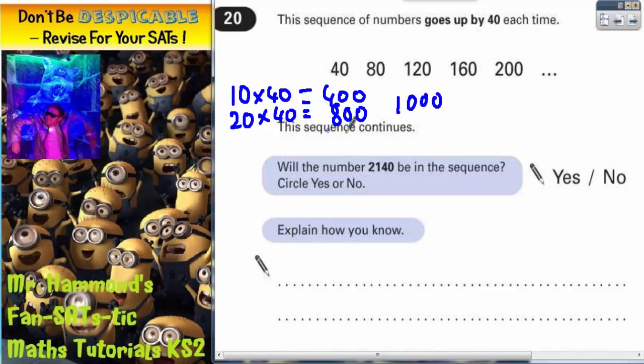Add another 20 lots on top of that, so add another 800. So 1,800 would be in the sequence.